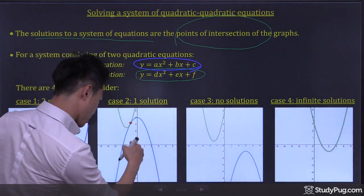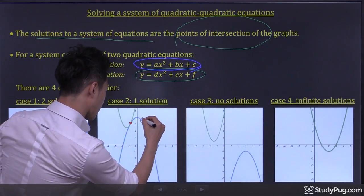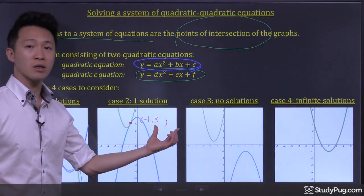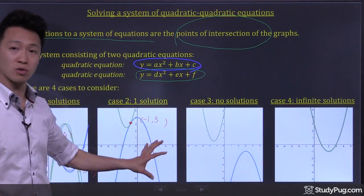In this case, that would be x is at negative 1, y is at 3. So (-1, 3) is the only solution to the system.